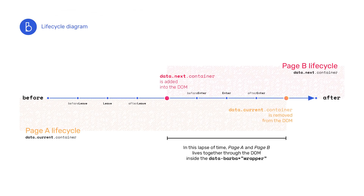Hooks are methods — they basically hold the code that we want to run at a certain point in time. As you can see, this diagram shows when exactly a hook gets called regarding the life cycle of page A, which represents the current page, and page B, which is the page we are landing on after the end of the transition.